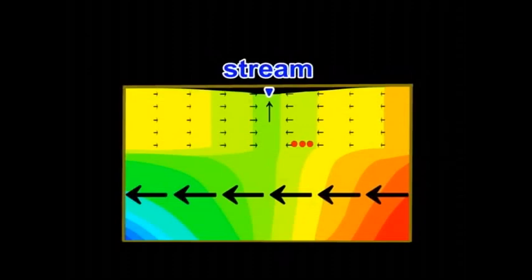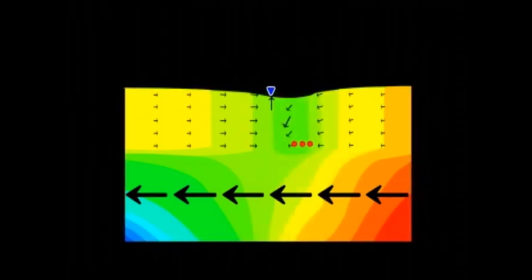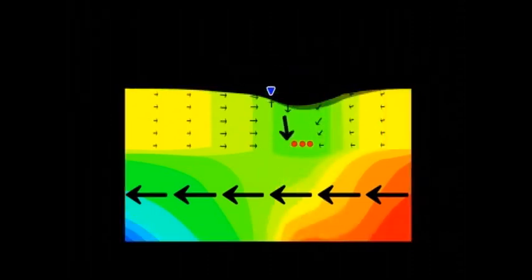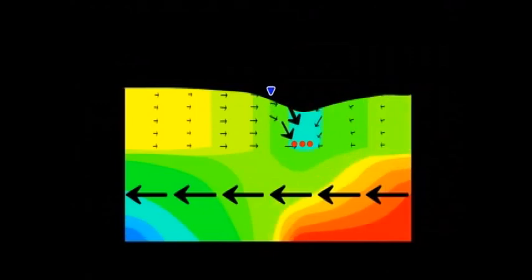Arrows represent the volume of water flowing through the ground. Much more water is flowing in the deep aquifer. Before pumping, water in the shallow aquifer flows to the center, then up and out to the stream. When pumping begins, the arrows turn toward the wells and grow larger, while flow toward the stream reverses direction and flows toward the wells.